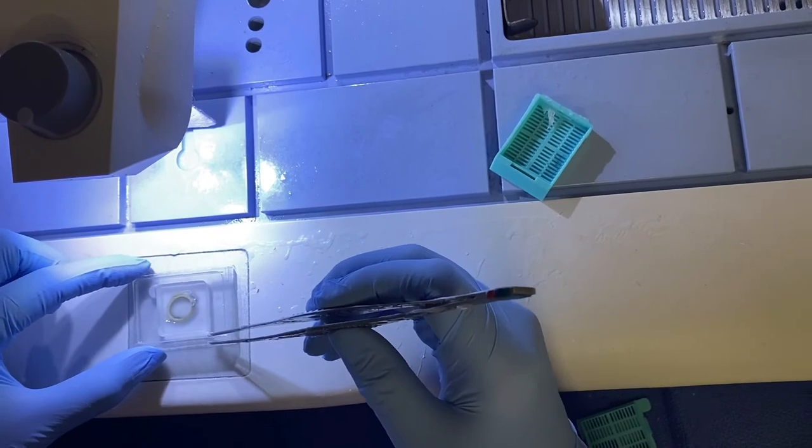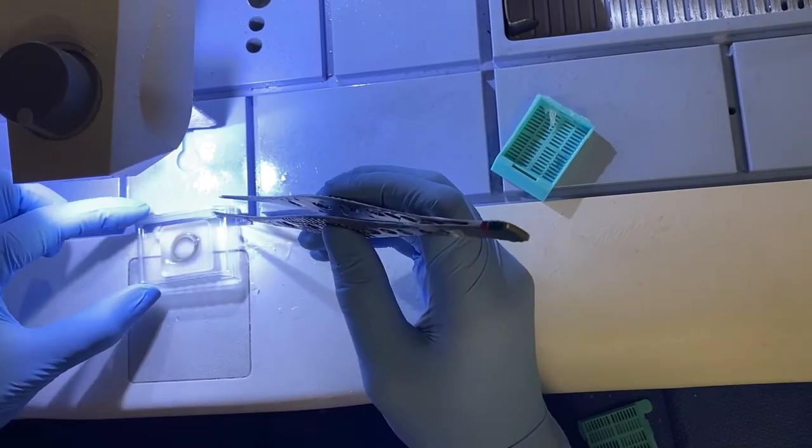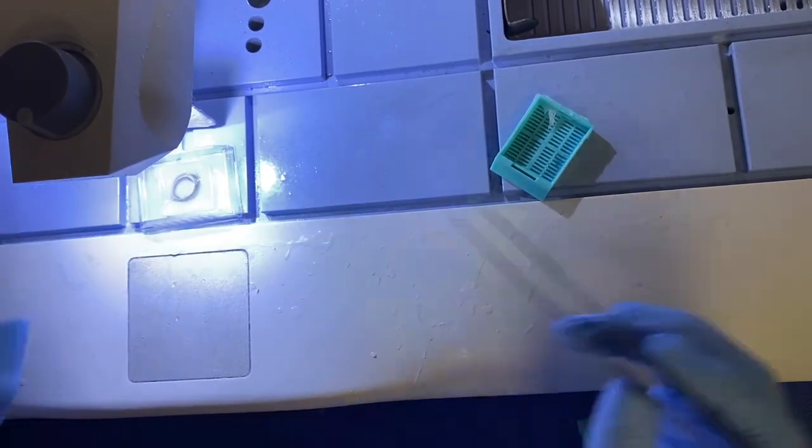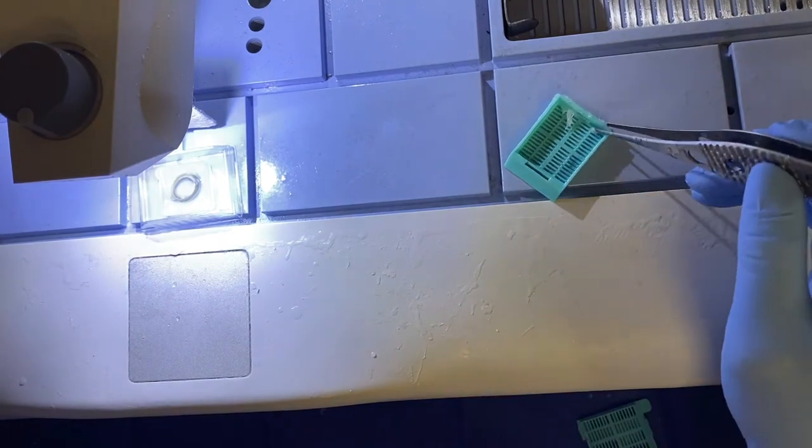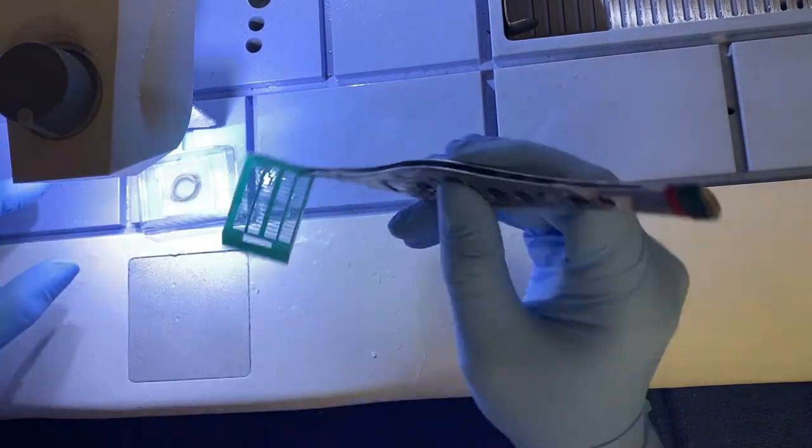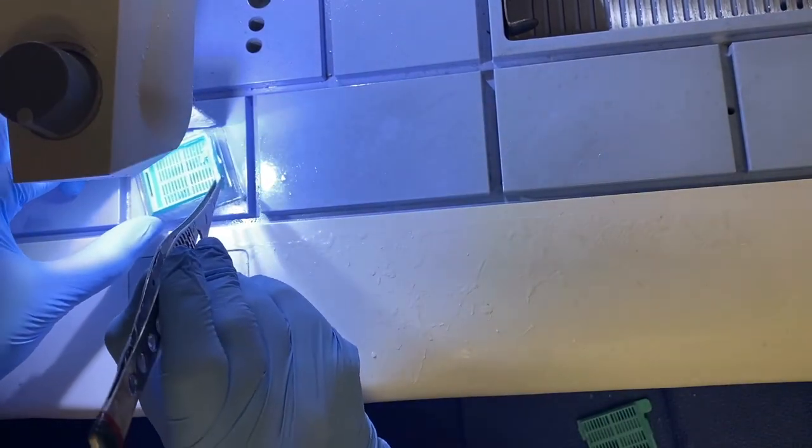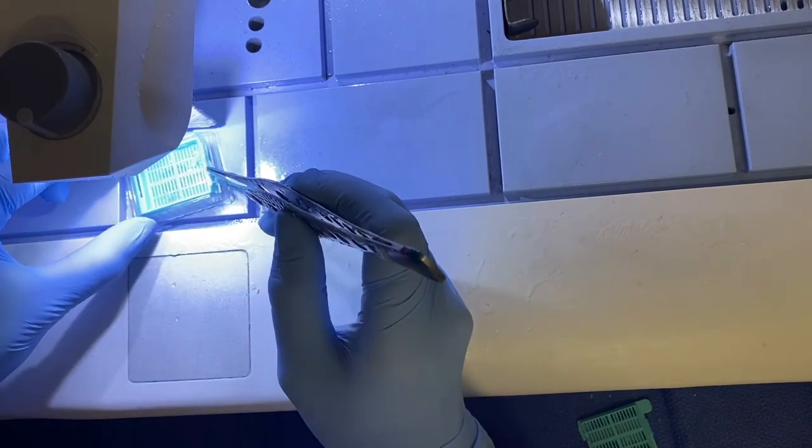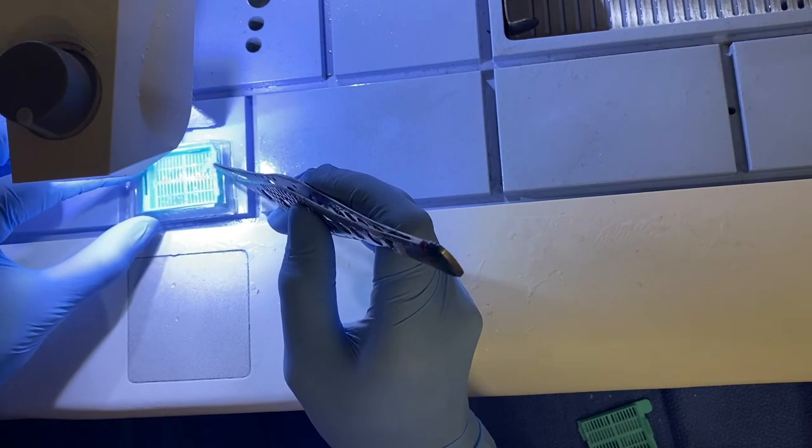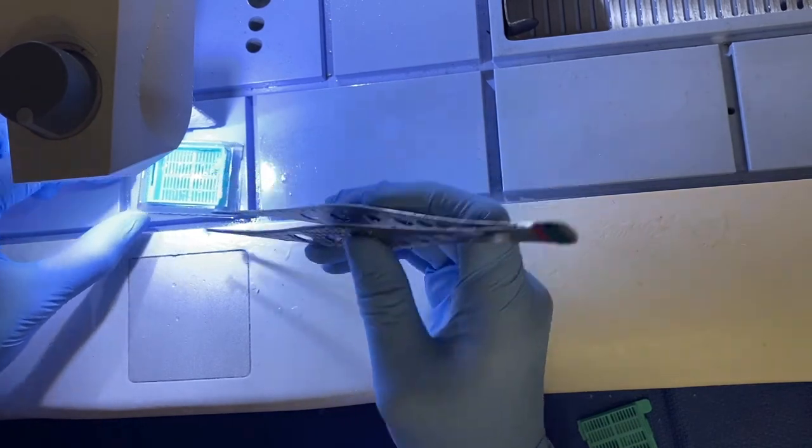Then we're going to move it back, take our cassette, and put it on the top. Again, we want to verify that we have the correct patient identifiers showing here. Push it down into the mold—it fits perfectly and kind of locks in place.